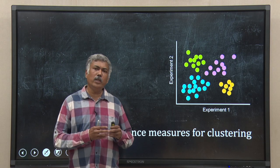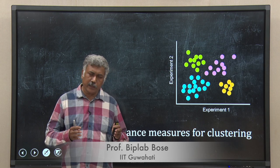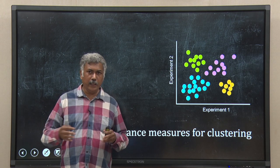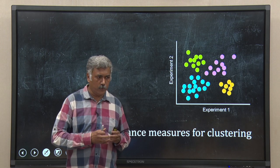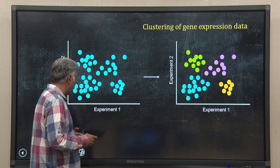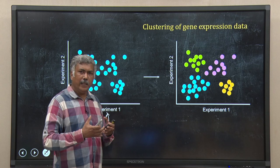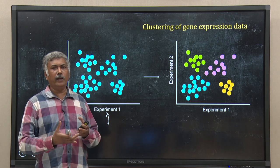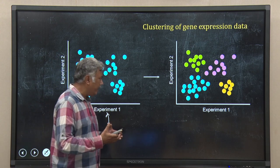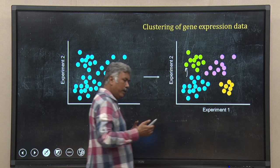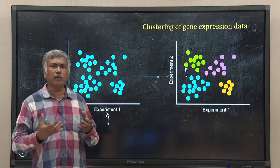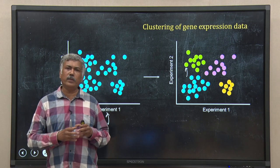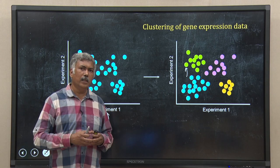Clustering and classification of data are two key components of statistical learning. In clustering, we have a heterogeneous population of data points and we group them into small, homogeneous clusters. For example, with gene expression data from two experimental conditions, the clustering algorithm tries to find which genes have similar behavior. When we say two data points have similar behavior, we need some measurement of closeness or similarity. In this lecture, I will discuss different types of distance measures used in machine learning, particularly in biology.